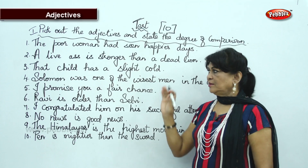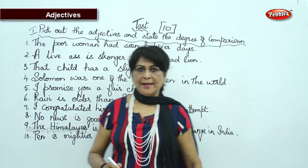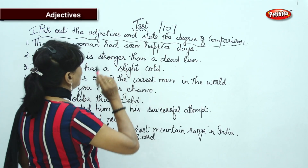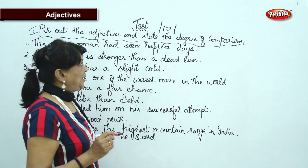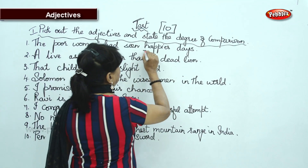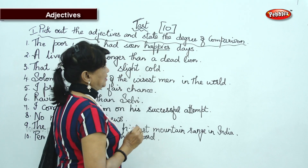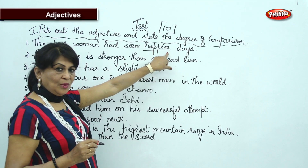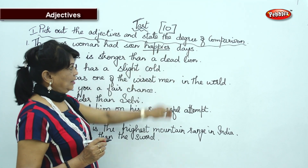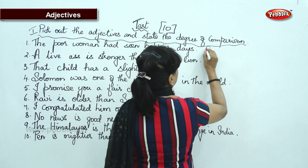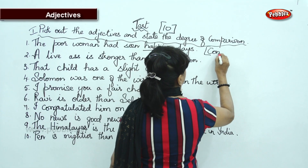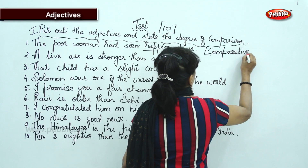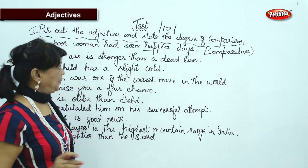Have you finished? I am going to check it up now. Let's see how much you get — I will give you a star. 'The poor woman had seen happier days.' Happier is an adjective. H-A-P-P-Y — Y has become I-E-R. What degree is it? It is comparative: happy, happier, happiest.